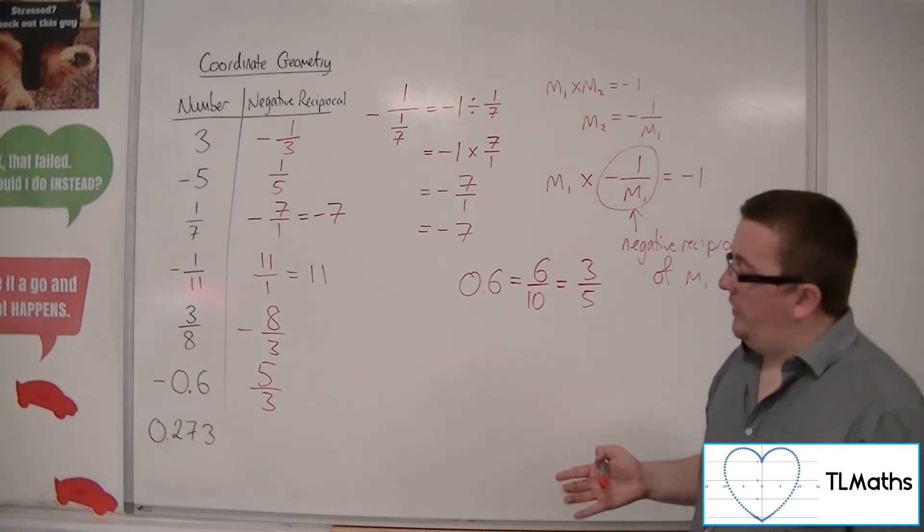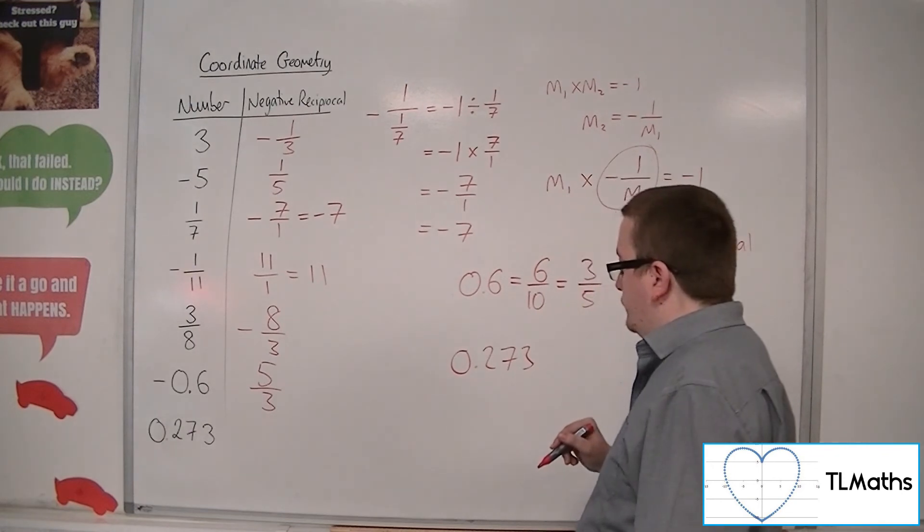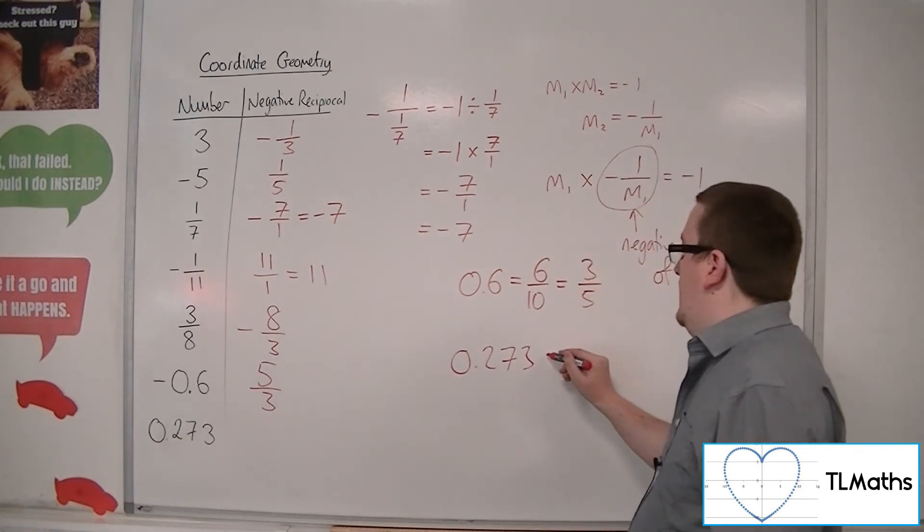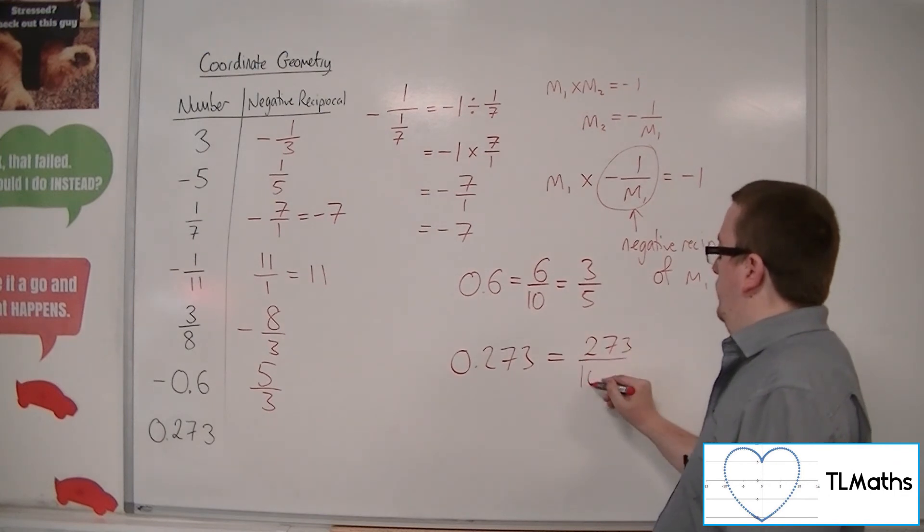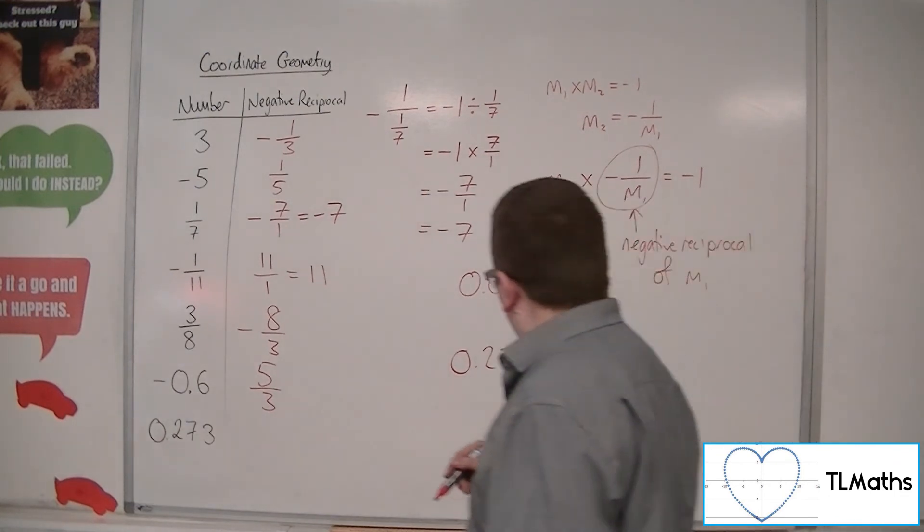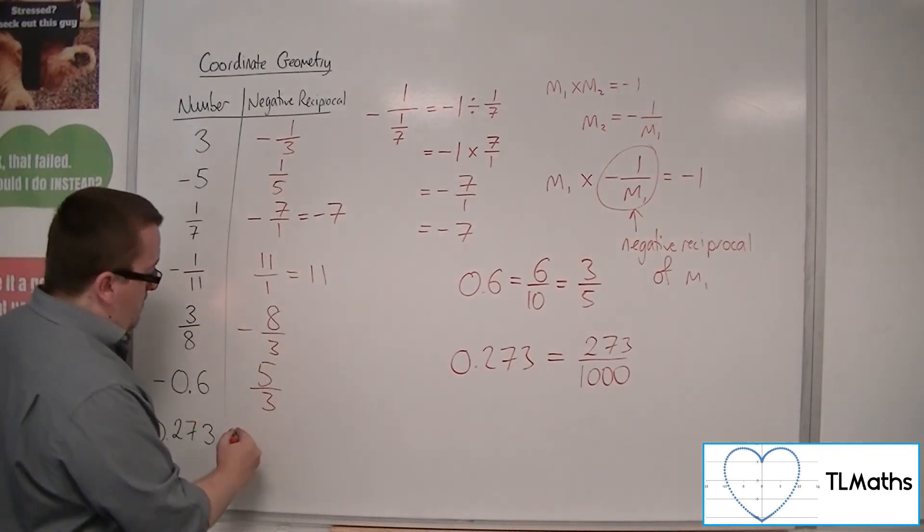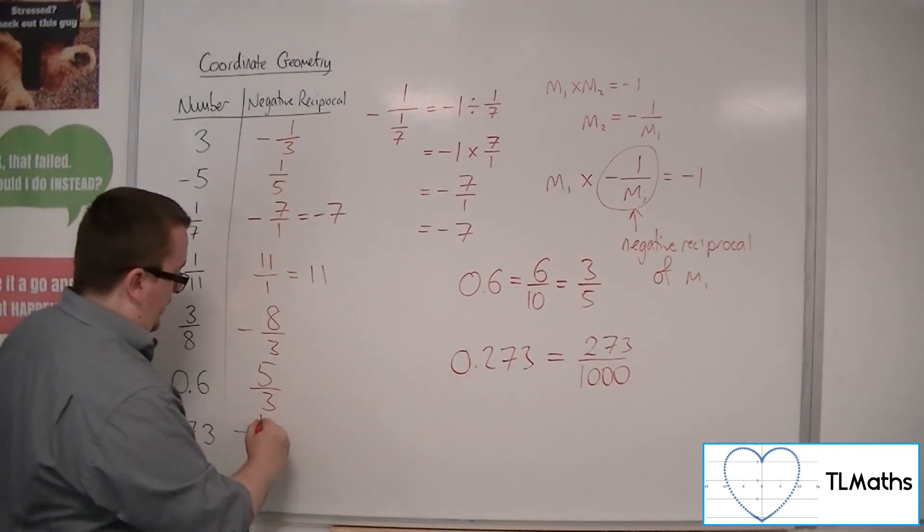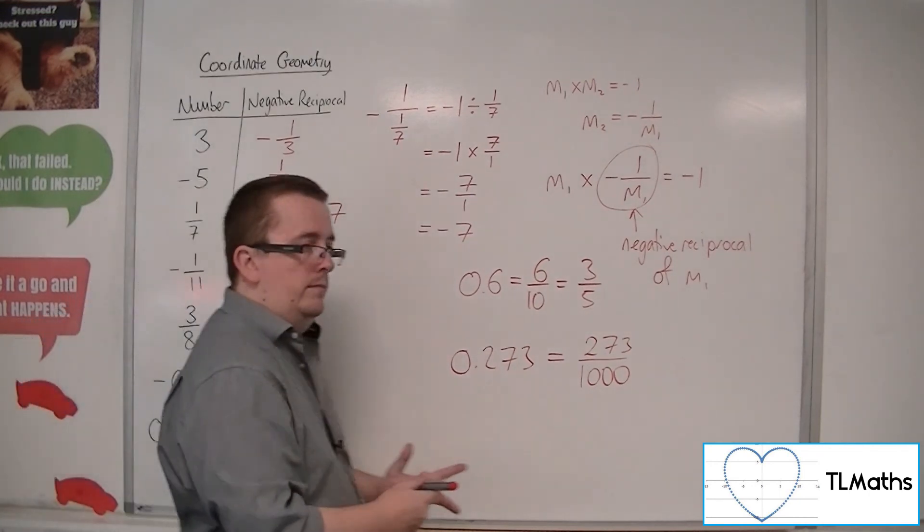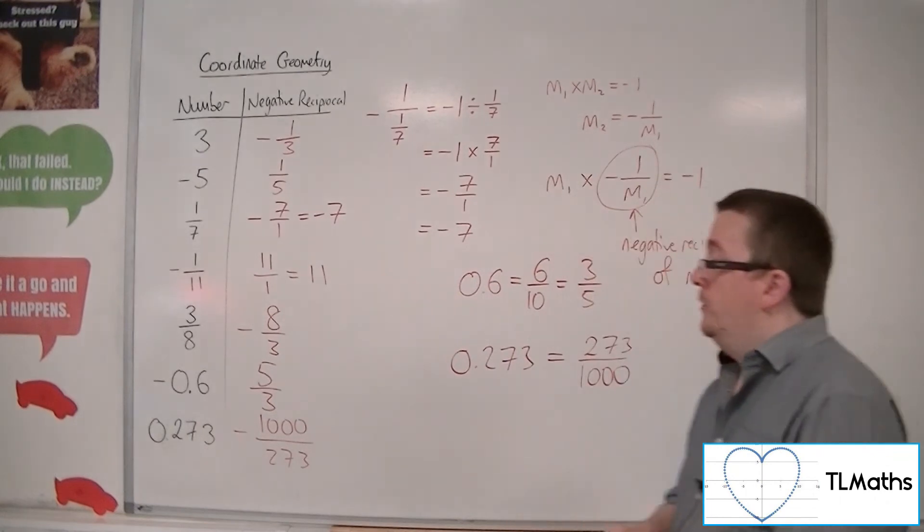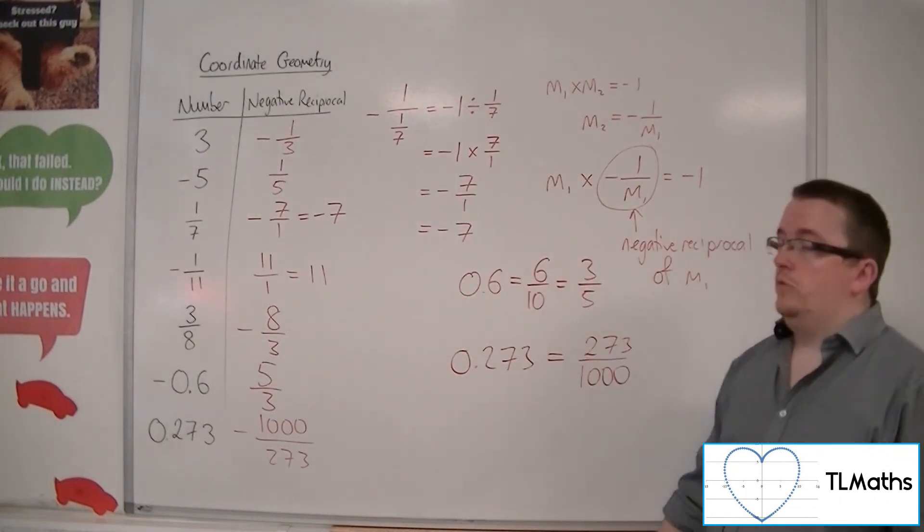And then finally, 0.273. Well, 0.273 is equal to 273 over 1,000. So the negative reciprocal will be minus, flip that fraction upside down, 1,000 over 273. And that's how you can find the negative reciprocal of any value that you need to. Thank you.